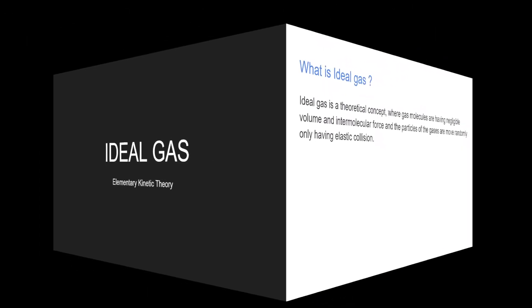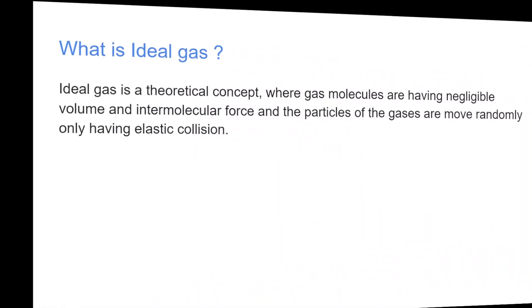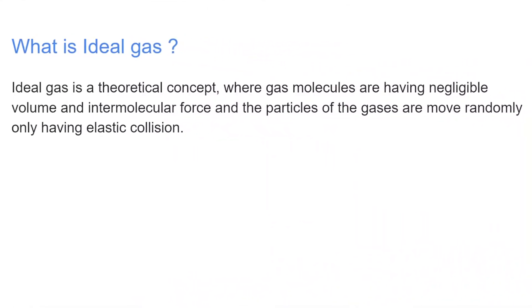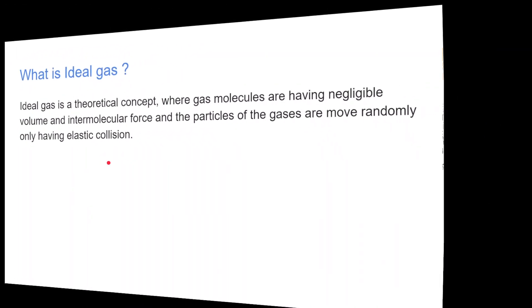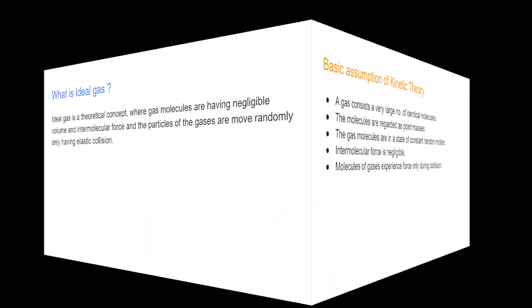What is an ideal gas? An ideal gas is a very theoretical concept where molecules have negligible volume and intermolecular force. The particles of the gas move randomly and only have elastic collisions. This is the basic definition of an ideal gas. In reality these conditions are not followed, so in reality those gases are called real gases.